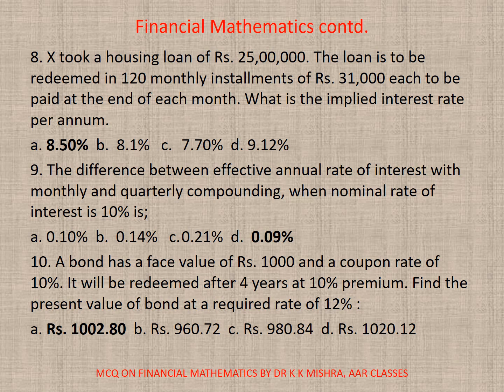Question 8: X took a housing loan of rupees 25 lakhs. The loan is to be redeemed in 120 monthly installments of rupees 31,000 each, to be paid at the end of each month. What is the implied interest rate per annum? After calculation, the correct option is A — 8.5%.